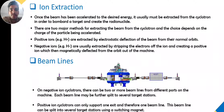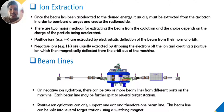For the beam line: with negative ions, there can be two or more beam lines from different ports on the machine, and each beam line may be further split into several charge stations. Beam lines are the way you collect the particle from the accelerator and distribute it to the intended purpose. A positive ion cyclotron supports only one exit, so one beam line is available for positive ions, whereas for negative ions there can be two or more beams.